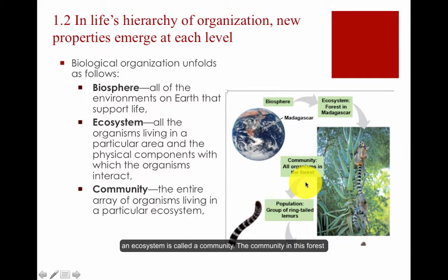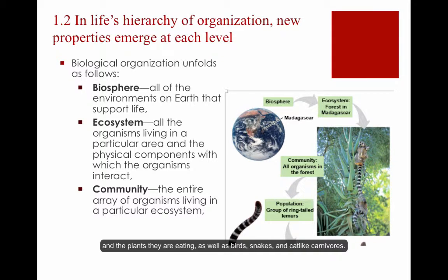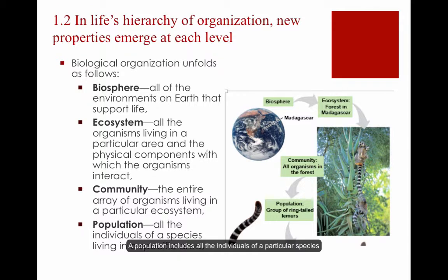The entire array of organisms in an ecosystem is called a community. The community in this forest ecosystem in Madagascar includes the lemurs and the plants they are eating, as well as birds, snakes, and cat-like carnivores. Each unique form of life is called a species. A population includes all of the individuals of a particular species living in an area, such as the ring-tailed lemurs in the forest community.